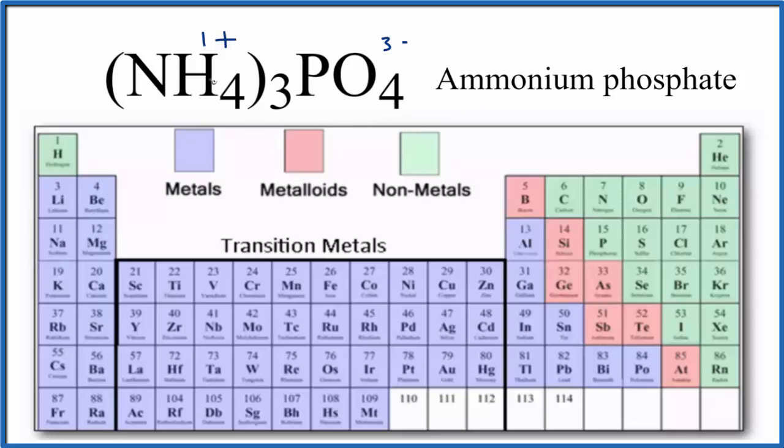The individual ions, the NH4, we have covalent bonds within that. The PO4, the phosphorus and the oxygens, those are covalent bonds. But because we have these polyatomic ions, one of the phosphate and then three ammonium ions, overall the compound is considered ionic.